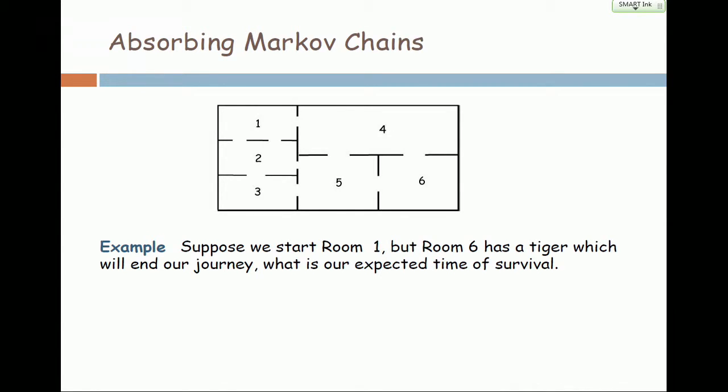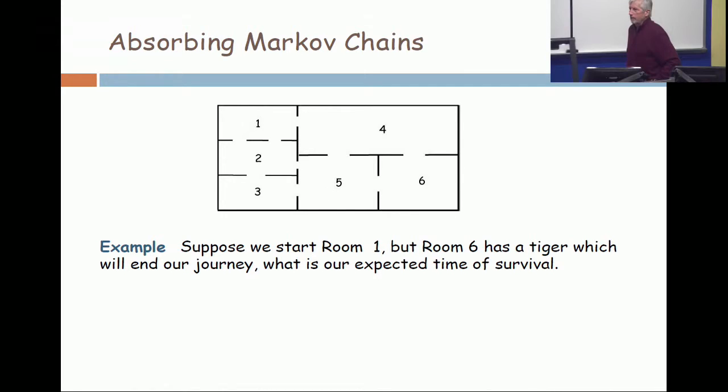Suppose we go back to the original movement. Room 6 has got a tiger in it. When we enter room 6 we are absorbed. This is called an absorbing Markov chain.